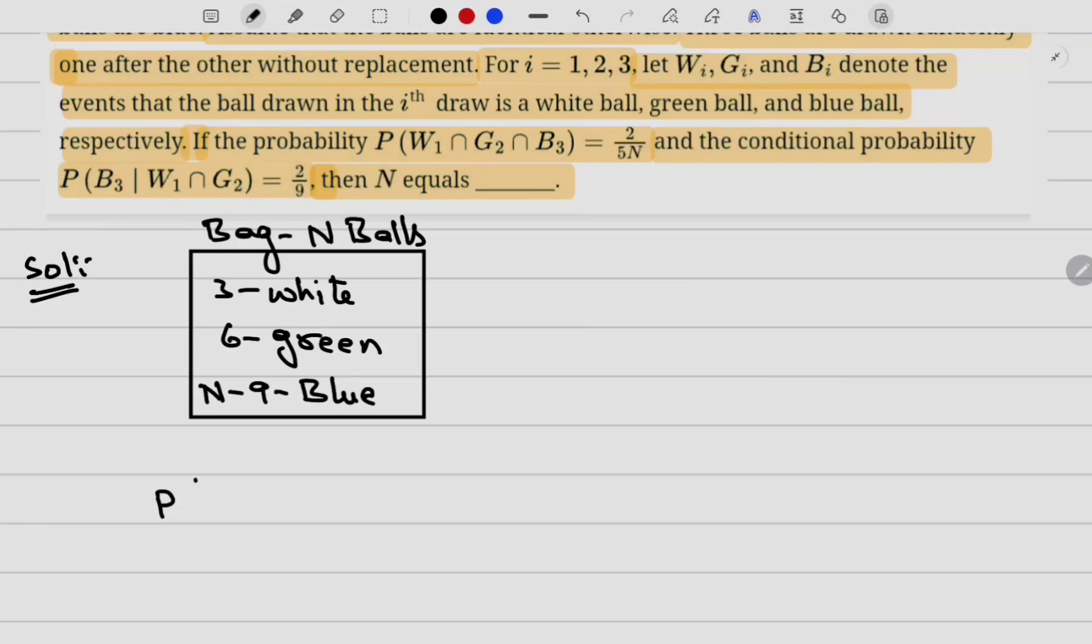Now in the question it is already given that probability of B3 given W1 intersection G2 is 2/9. We already know that P(A | B) equals P(A ∩ B) divided by P(B) from conditional probability.